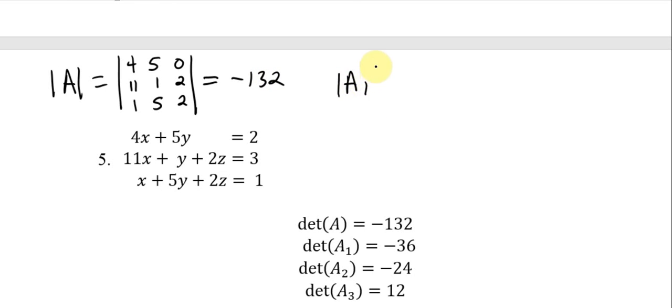Now you want to find the determinant of A sub 1. So here we replace the first column with 2, 3, 1, rewrite the second and third columns. The determinant gives you negative 36.